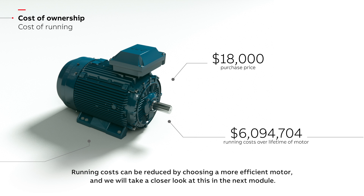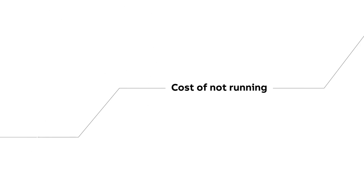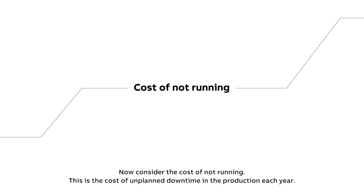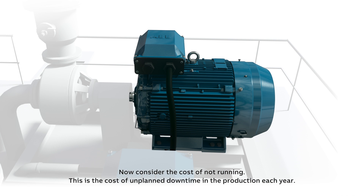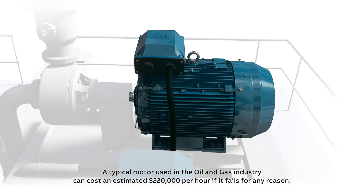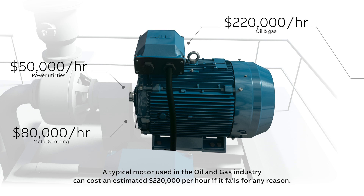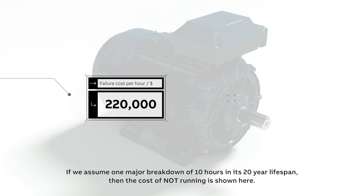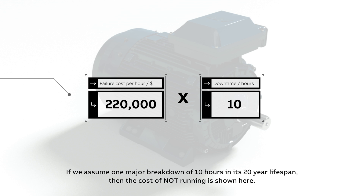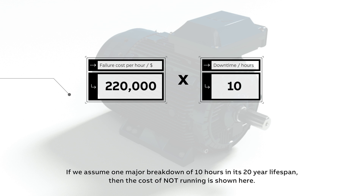Running costs can be reduced by choosing a more efficient motor, and we will take a closer look at this in the next module. Now consider the cost of not running — this is the cost of unplanned downtime in the production each year. A typical motor used in the oil and gas industry can cost an estimated $220,000 per hour if it fails for any reason. If we assume one major breakdown of 10 hours in its 20-year lifespan, then the cost of not running is shown here.